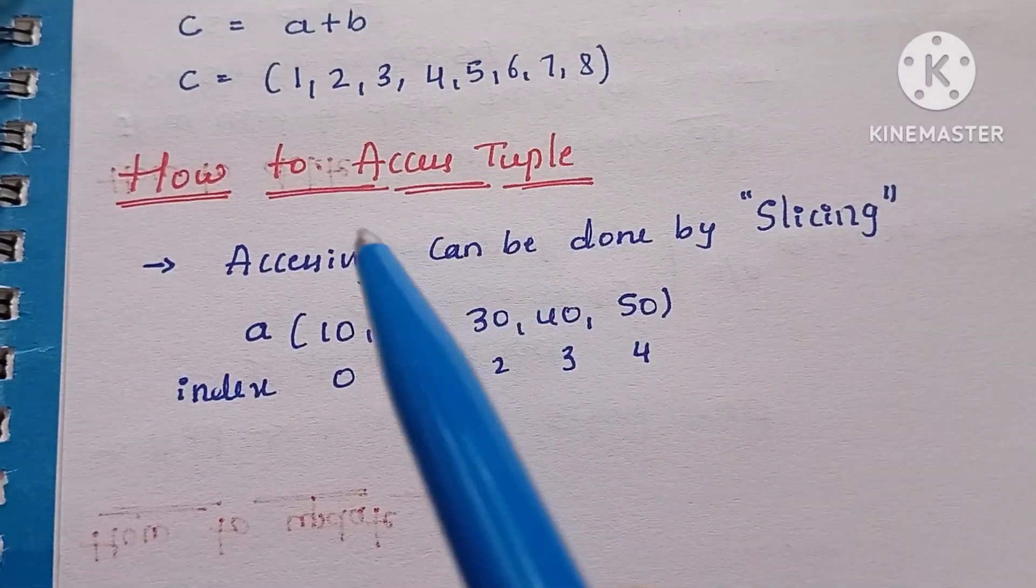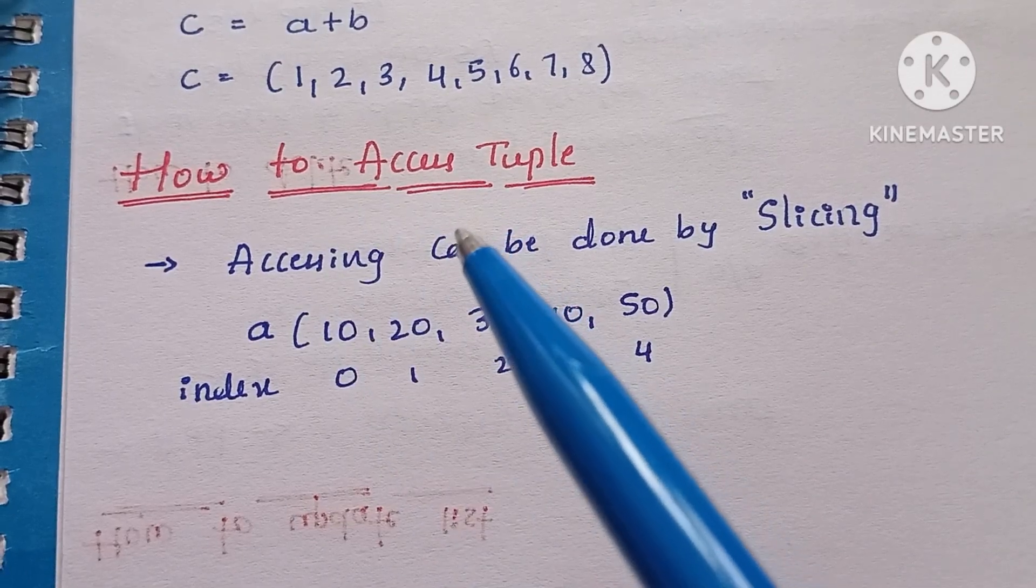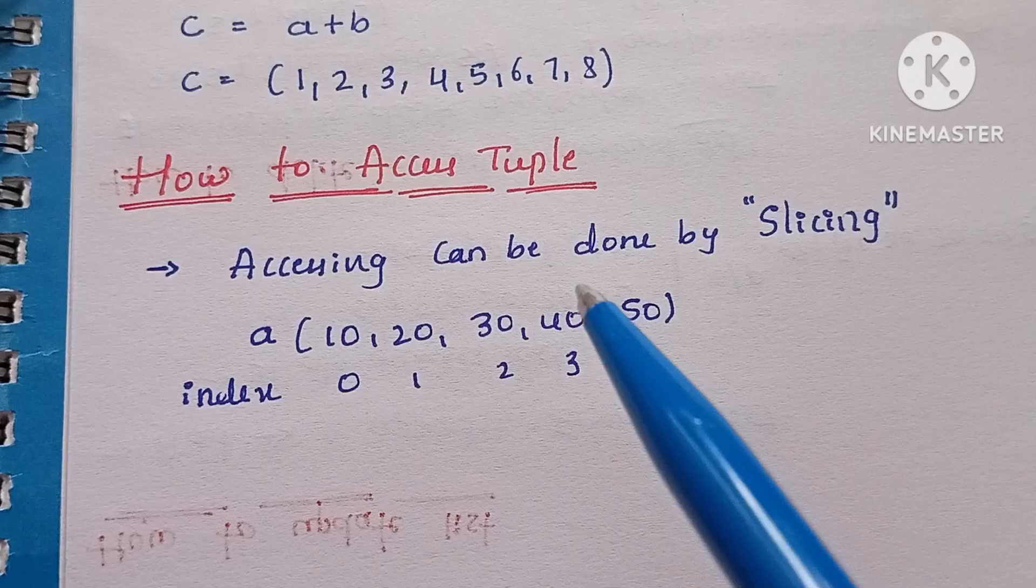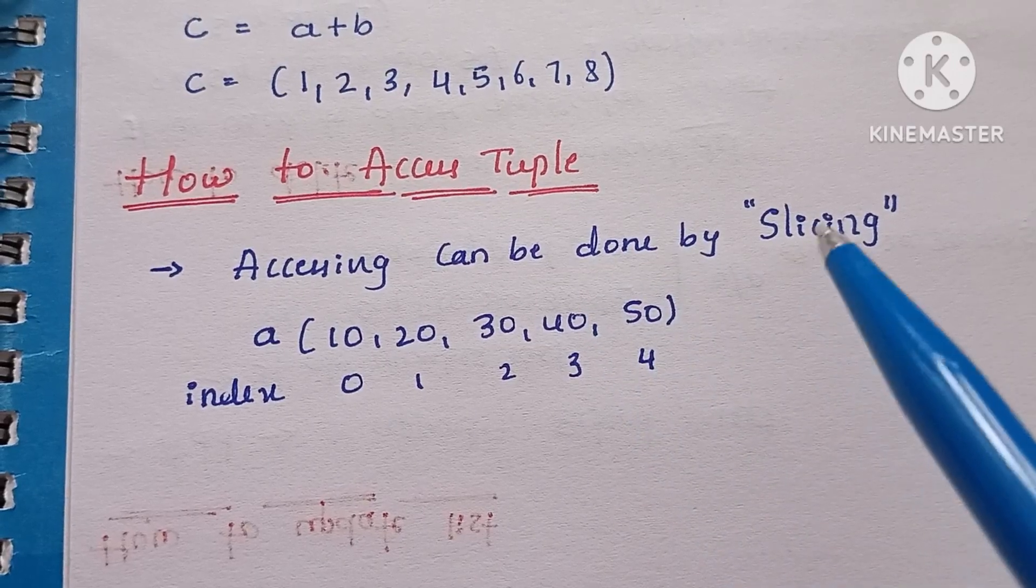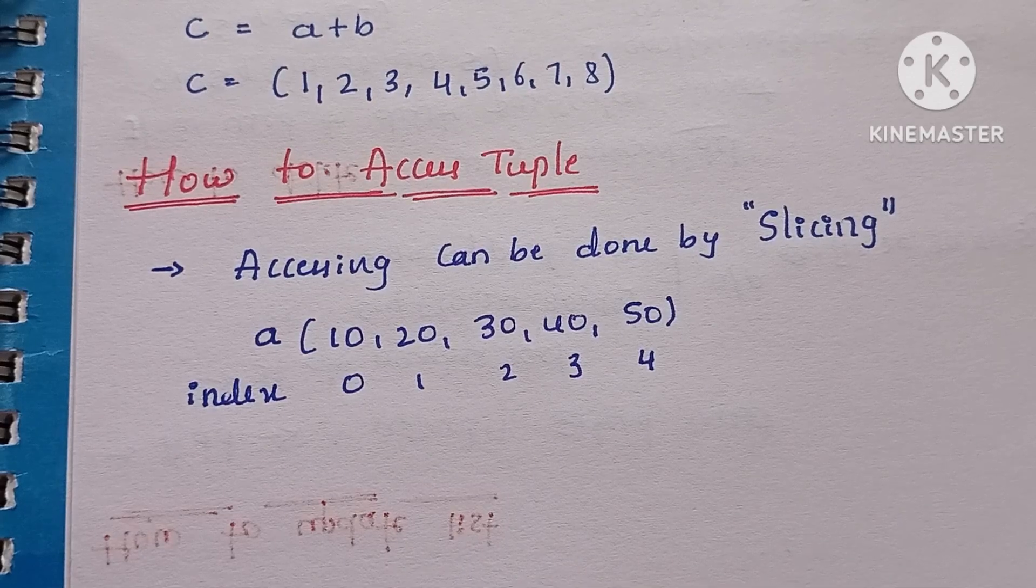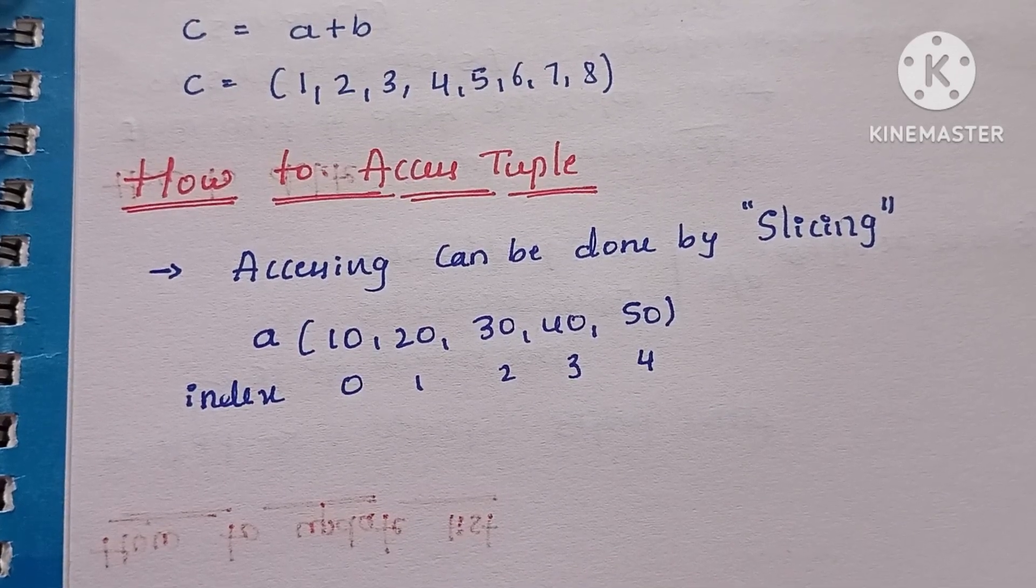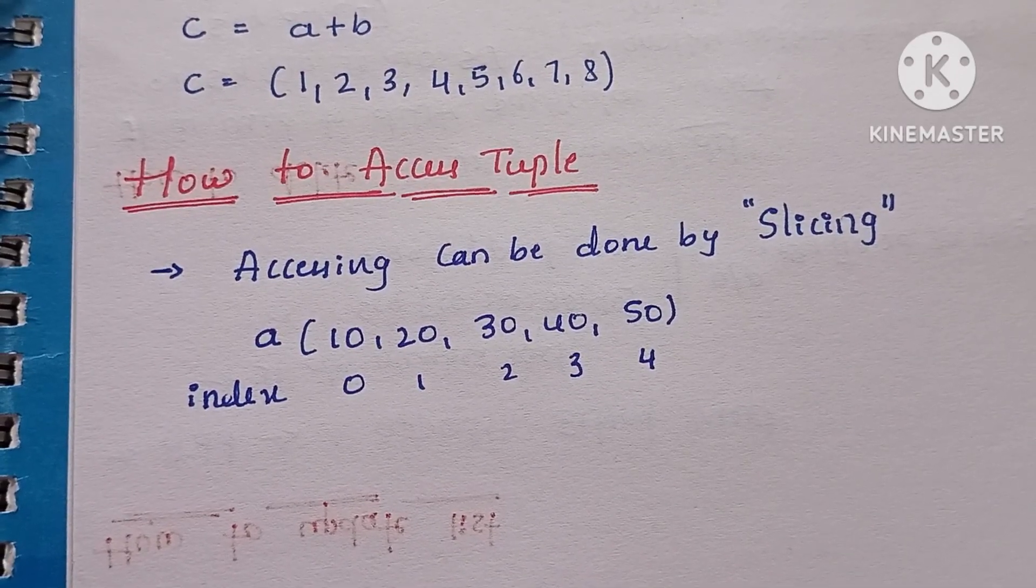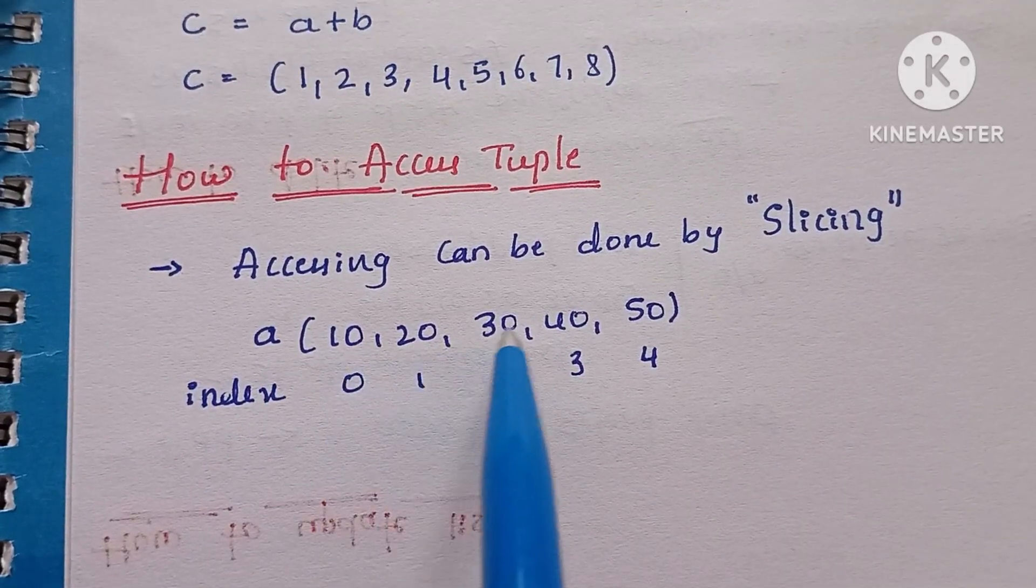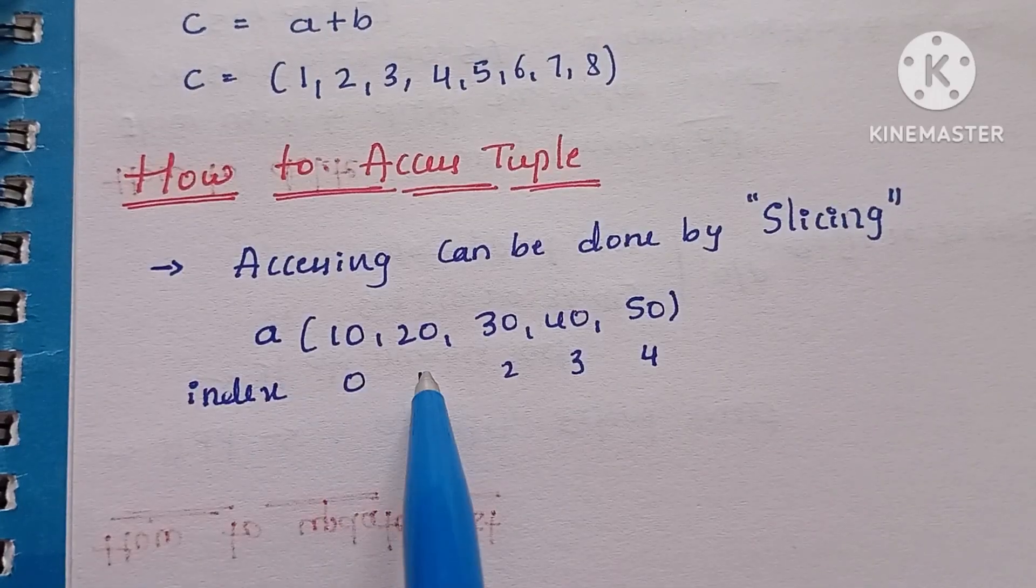Now, next, how to access the tuple. In this, tuple accessing can be done by slicing. What is the meaning of slicing? It means giving the index range. By using this index range, then only you can access the element. For example, a = (10, 20, 30, 40, 50).